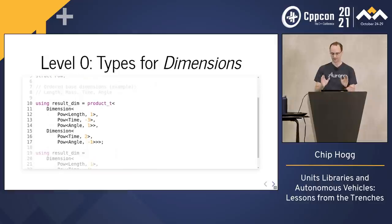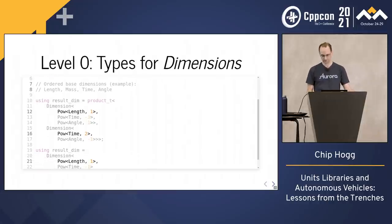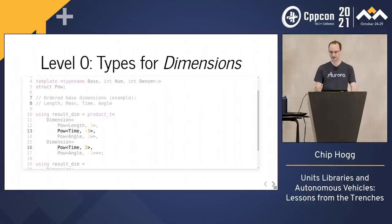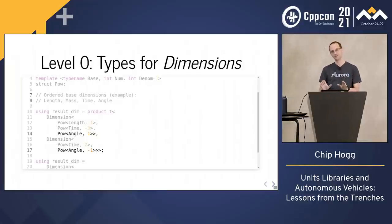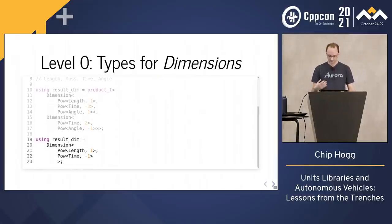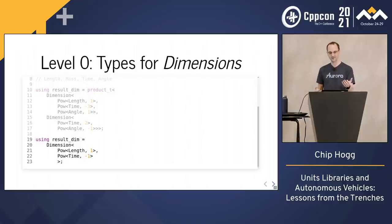Let's briefly step through this multiplication operation to see how the merging works. At the head of our lists, we have a length and a time — these are different. Length comes first in our ordering, so we copy it directly to the output. Now we have time and time — these are the same, so we just add the exponents and copy the result to our output. Finally, angle and angle — again the same, but this time when we add the exponents we get zero, so we omit angle from the output. In the end, we find that the product is length to the one, time to the minus one for the dimension. I'm skipping over the power operation, but once we have product and power, we automatically get inverse, quotient, and root too.